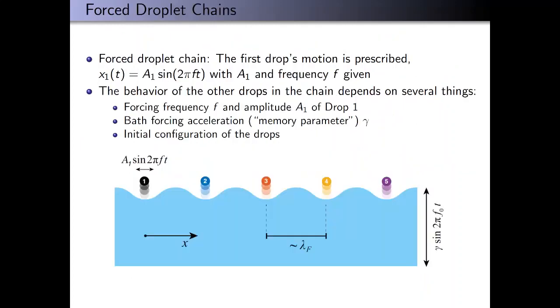Now we're going to consider the case when we force the droplet on one end of the chain sinusoidally with prescribed amplitude A1 and frequency F, and leave the other four droplets unforced. The behavior of the other drops depends on this forcing because they all interact with each other via the wave field. It also depends on the memory parameter gamma as well as the initial configuration.